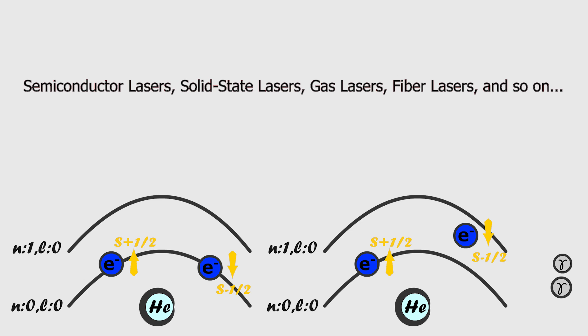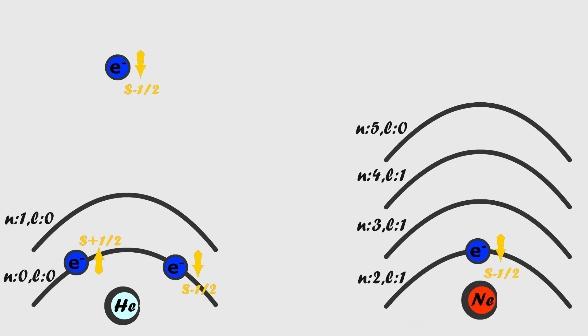There are many laser production methods that work on this principle. Let's understand the working principle of one of these methods, the helium-neon laser. The helium-neon laser is designed using forbidden transitions, metastable states, and the interaction of excited electrons with photons as we have learned.